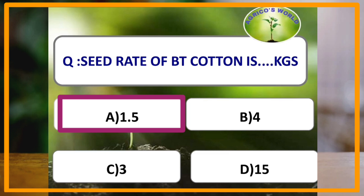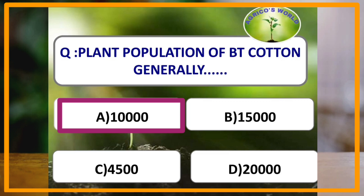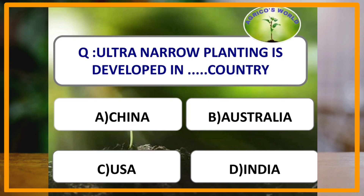The plant population of BT cotton is generally 10,000 plants per hectare. Ultra-narrow planting is developed in which of the following countries? Ultra-narrow planting is developed in the USA. In ultra-narrow planting, the spacing adopted is 19 by 19 cm, so as to accommodate 2,77,000 plants per hectare.